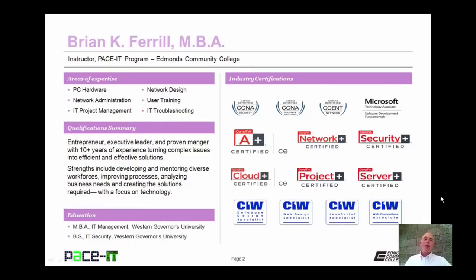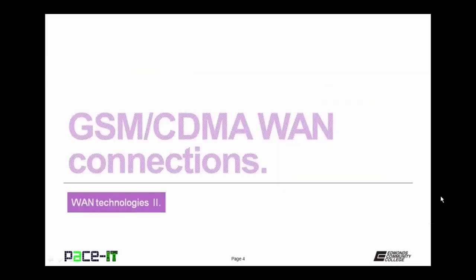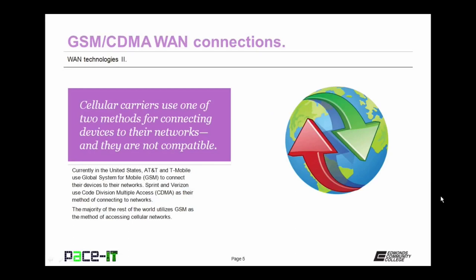Good day, I'm Brian Farrell, and welcome to Pace IT's session on WAN Technologies Part 2. Today we're going to be discussing GSM and CDMA WAN connections, then WiMAX WAN connections, and we're going to conclude with satellite wide area network connections. I'm going to begin with the GSM and CDMA wide area network connections. All cellular carriers use one of two methods for connecting devices to their networks, and those methods are not compatible.